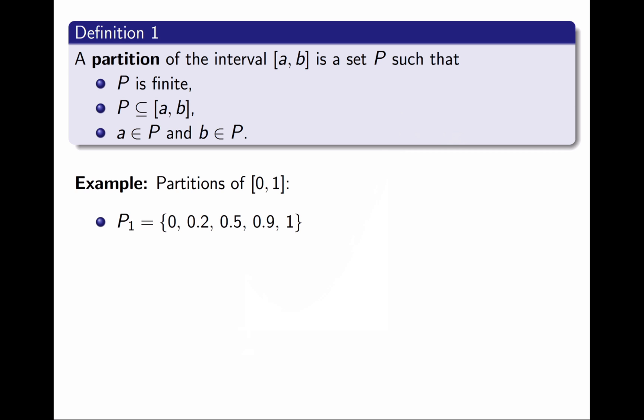For example, the set {0, 0.2, 0.5, 0.9, 1} is a partition of the interval [0,1]. It is not the only one. Here are three other partitions. How does this help me? Every partition gives me a way to split the interval into subintervals, and I can use those subintervals to cut the region into slices.